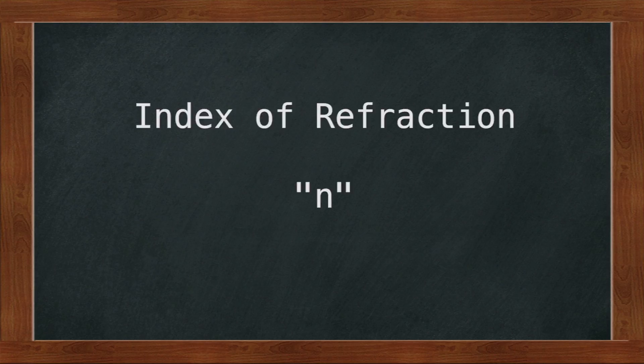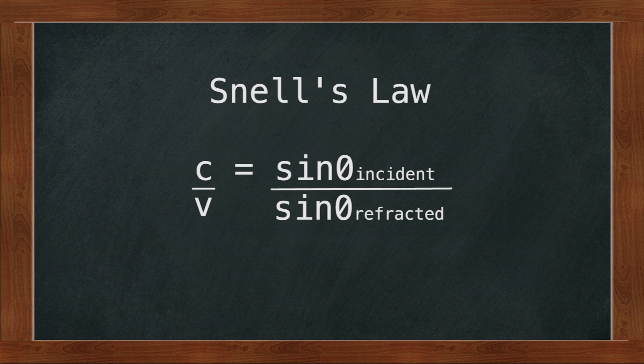The index of refraction of a material has symbol N and is defined as the speed of light in a vacuum, or C, divided by the speed of light through a particular medium, or V. It is also described by Snell's law, which states that C over V equals sine of the incident angle over the sine of the refracted angle.